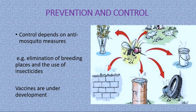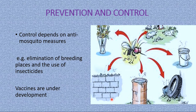For prevention and control, mosquito control measures are essential — including elimination of breeding places and use of insecticides. Stagnant water in pots, buckets, tiles, or surrounding areas must be removed, as these are places where mosquitoes breed and increase in population. Insecticides and mosquito repellents should also be used. Additionally, vaccines are currently under development but are not yet in widespread use. These are the prevention and control measures to follow for preventing dengue fever.